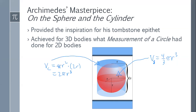So what is the relationship between the volume of a sphere and the volume of the cylinder? Clearly the volume of the cylinder is bigger. If I take the ratio of the cylinder over the sphere, a lot of cancellation happens — the π and r³ terms cancel — and I end up with 2 over 4/3, which gives three over two.